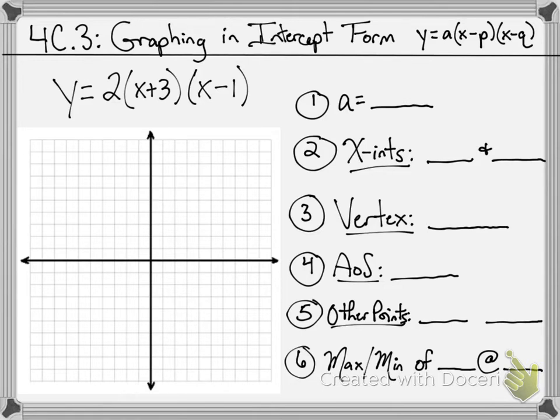These problems here are going to be a little bit different. While standard and vertex form, we went ahead and found the vertex first, in intercept form you actually have to find the intercepts first in order to go find the vertex. I'm using a couple of examples from your current note packet. Let's take a look at here, y equals 2 times x plus 3 times x minus 1.